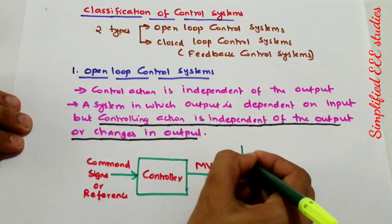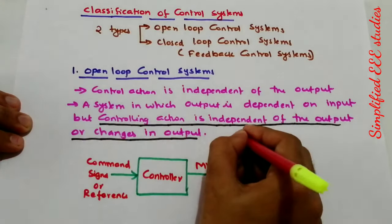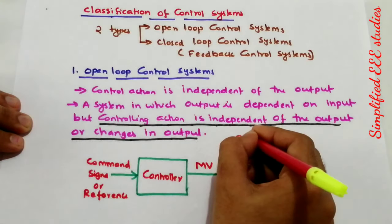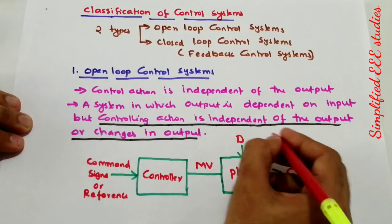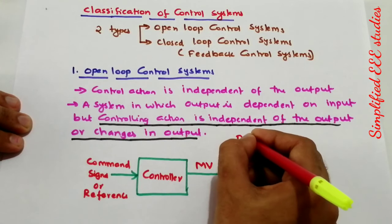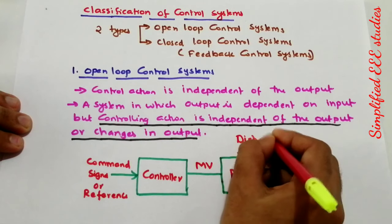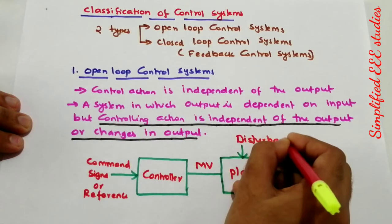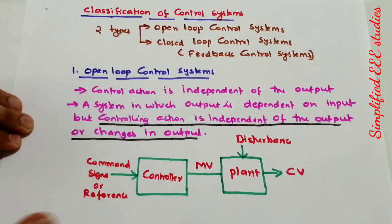There will also be a disturbance — I already explained individually what disturbance, plant, controller, manipulated variable, controlled variable, and reference signal each mean. So this is a typical open loop control system block diagram.